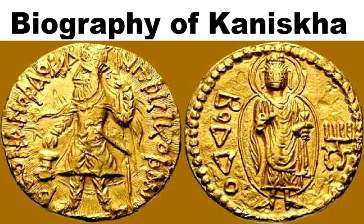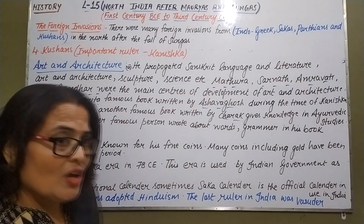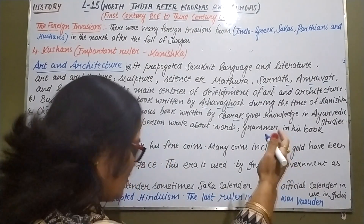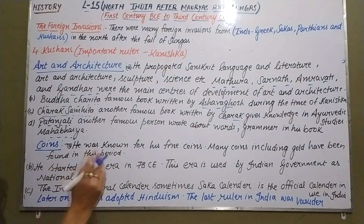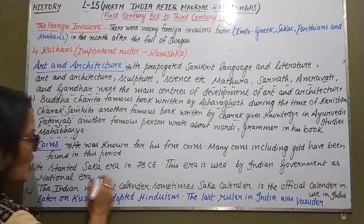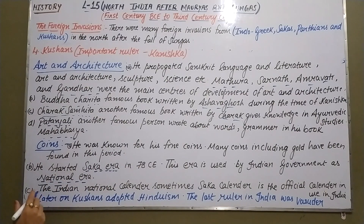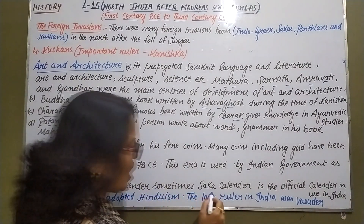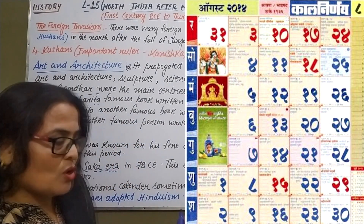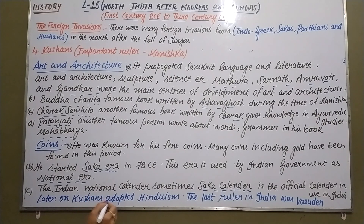Now about coins. Kanishka was known for his fine gold coins, which show the prosperity and easy availability of gold during that period. He started the Saka era in 78 CE, also known as the Kanishka era. This era is used by the Indian government as its national era — the Indian national calendar is the Saka calendar, used as the official calendar in India. Later, the Kushans also adopted Hinduism.